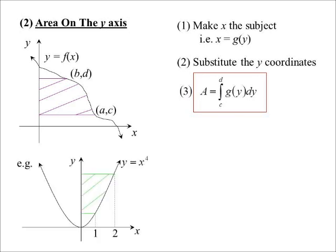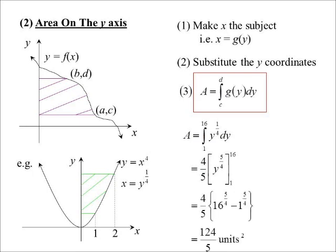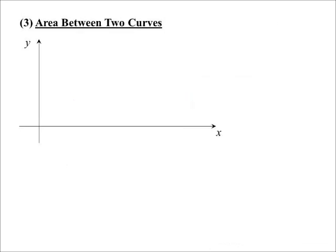Here's our curve — it looks like a parabola but it's x to the power of four — and we're going to the y-axis. Rearranging gives x equals y to the power of one quarter. I don't substitute one and two in; I want the y values — one and sixteen. Then add one to the power, divide by the power, substitute in sixteen and then one. The fourth root of 16 and the fourth root of 1 are both exact, so no issue there.